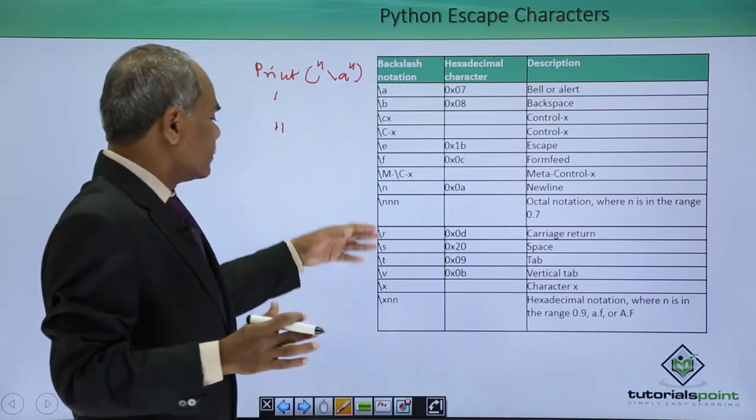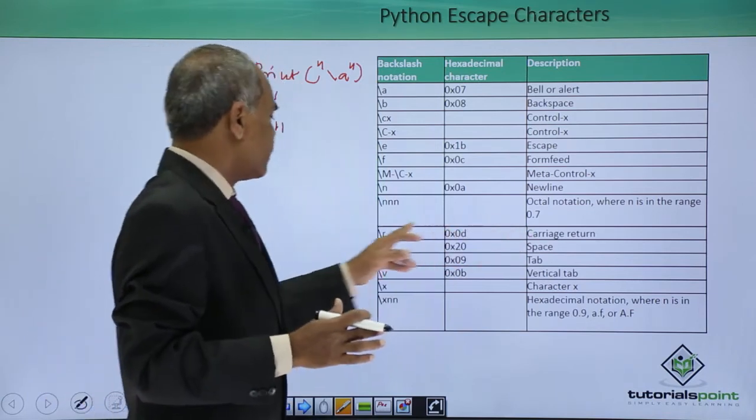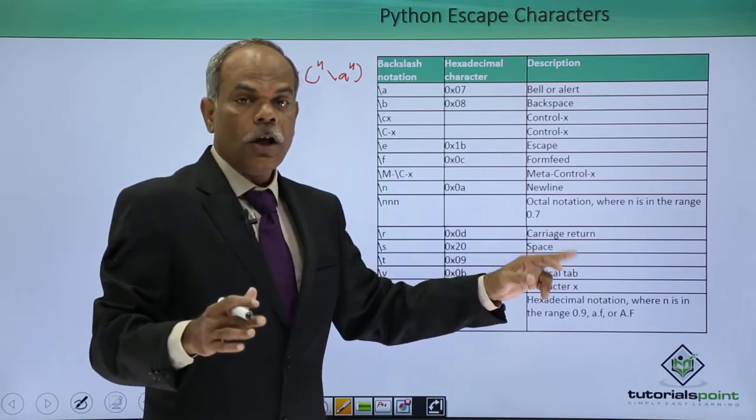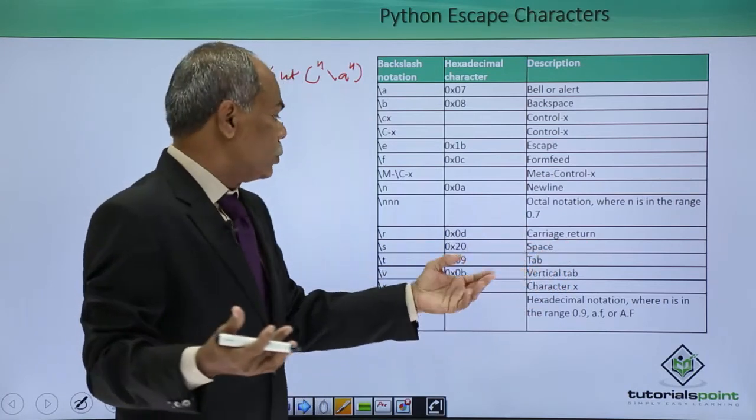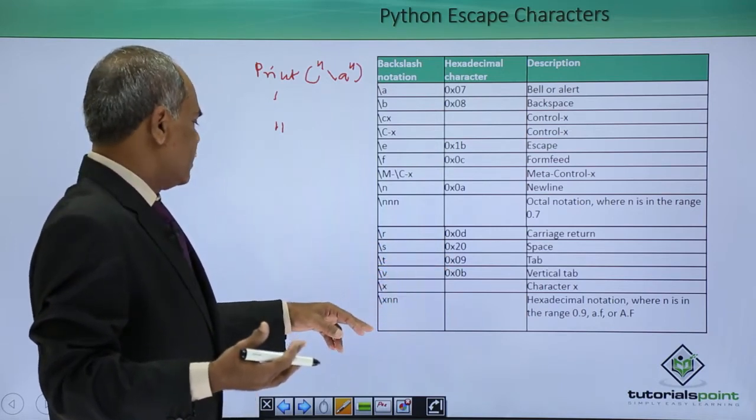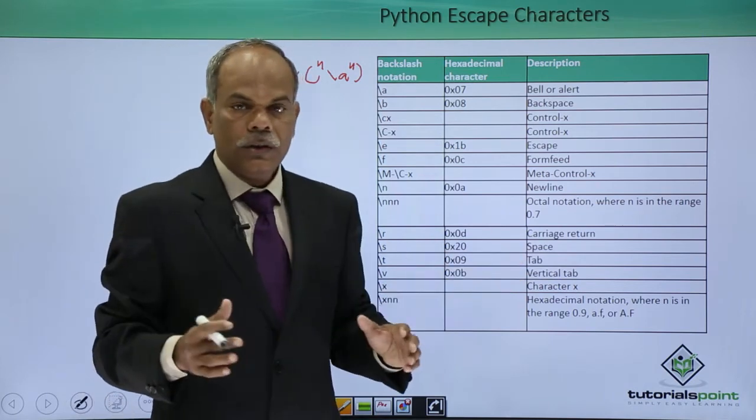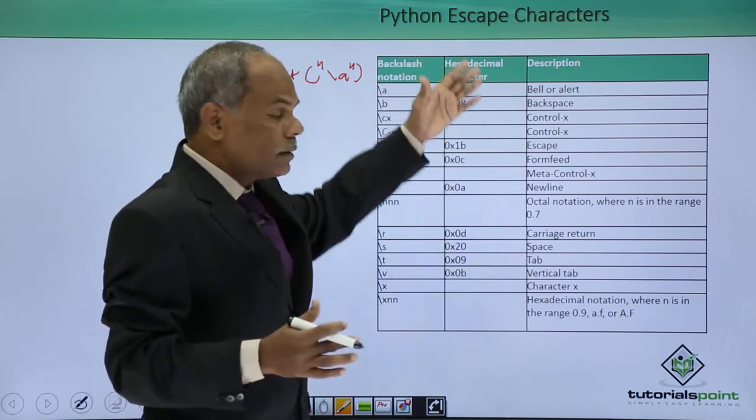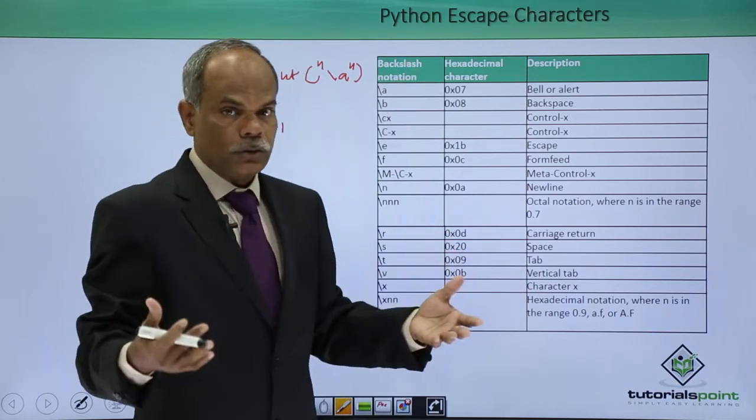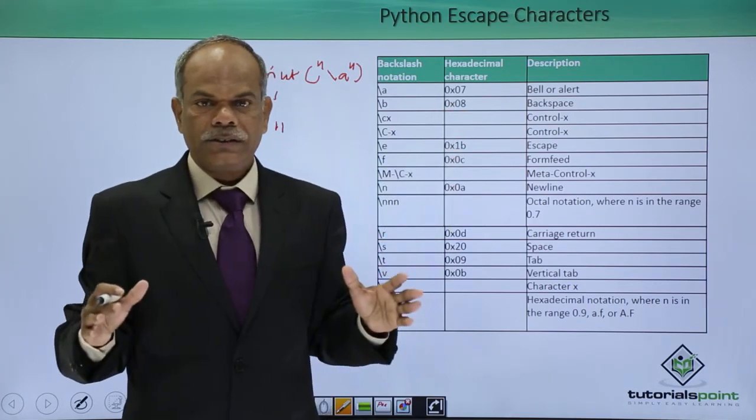And other escape sequences are also shown here: carriage return, for that slash r; a non-printable space, slash s; for vertical tab, that is slash v; for hexadecimal, that is slash x, and so on. So these are all the escape sequences or escape characters, how they are used in Python. This was a summary of all the escape characters in Python.